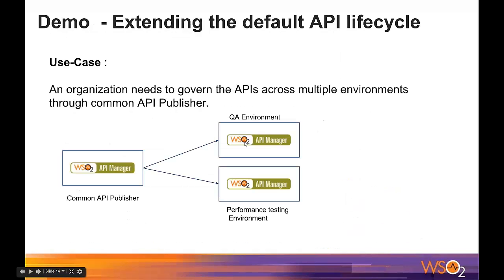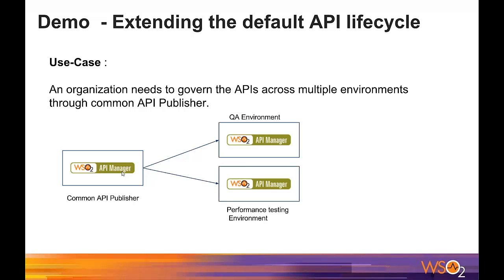Let's take a scenario where the default lifecycle states are not enough for some companies. For example, say we want to push our API to a QA environment — a pre-production testing environment — before publishing it. Let's see how we can achieve this kind of scenario using the new lifecycle extension feature. The overall image of this scenario is: after creating an API, we push it to an external QA environment — another API Manager environment — and then publish it.